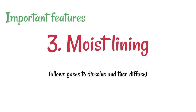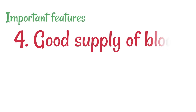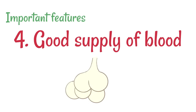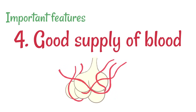It's also got a moist lining. The inside of each alveolar sac is moist, which allows gases to dissolve and then diffuse across the lining. It's also got a very good blood supply — each one of the alveoli has lots and lots of blood capillaries surrounding it.